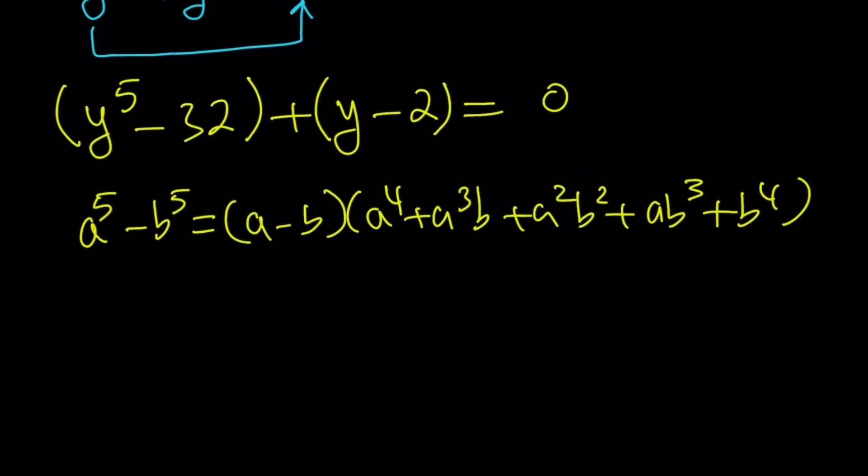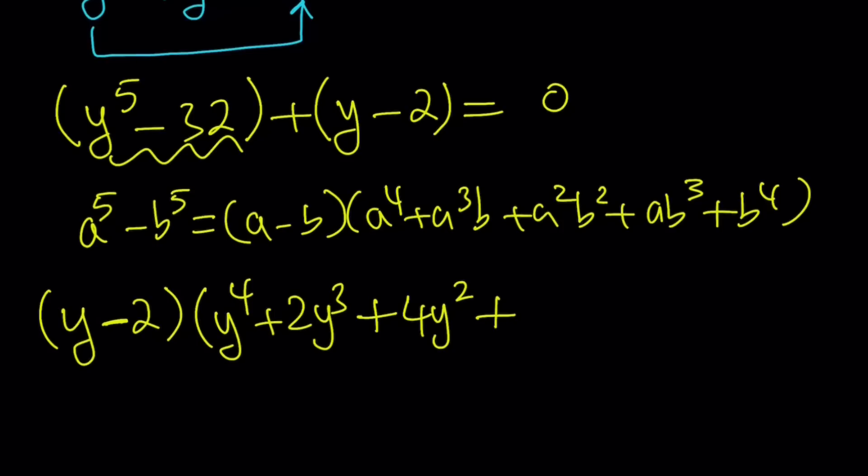If you want to check, you can distribute on the right-hand side and that should give you a to the fifth minus b to the fifth. So by using that formula, we can go ahead and factor this into y minus 2 multiply by y to the fourth plus y to the third times 2, so that's going to be 2y to the third. And notice that the signs are going to be all positive because this is a negative sign. Plus y to the second power b to the second power, that is going to be 4y squared, plus a, which is y, times 2 cubed, that's 8y. And finally, we're going to write 2 to the fourth power, which is positive 16. So that's how we can factor it, basically.